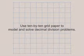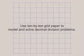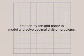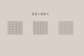Students can also use 10 by 10 grid paper to model and solve decimal division problems. For example, to model a problem such as 2 and 5 tenths divided by 5 tenths, because there is a decimal divisor, begin by reviewing with students the measurement interpretation of division.